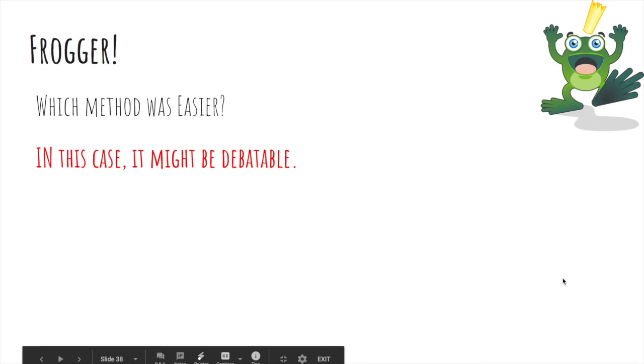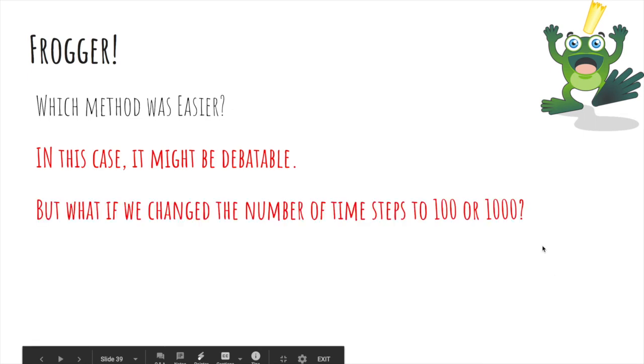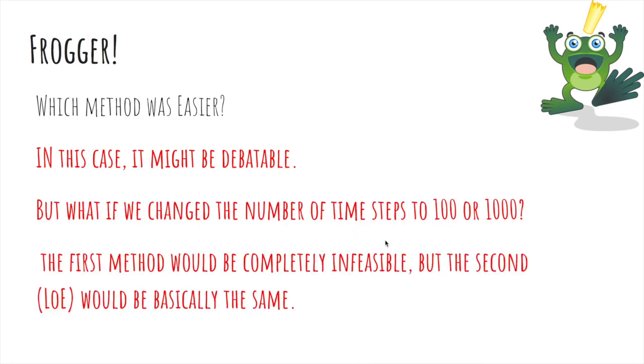So which method was easier? In this case, it might be debatable. But if we change the number of time steps to 100 or 1,000, the first method would be completely infeasible. But the second method would be the same, because you would just get 1,000 times PR minus PL.